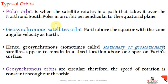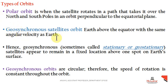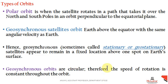A polar orbit passes over the north and south poles, perpendicular to the equatorial plane. A geosynchronous satellite orbits at the same angular velocity as the earth's rotation, meaning its orbital period equals the earth's rotation period of 24 hours. A geostationary satellite is a geosynchronous satellite whose orbit is circular with a constant speed of rotation, making it appear stationary relative to the earth.